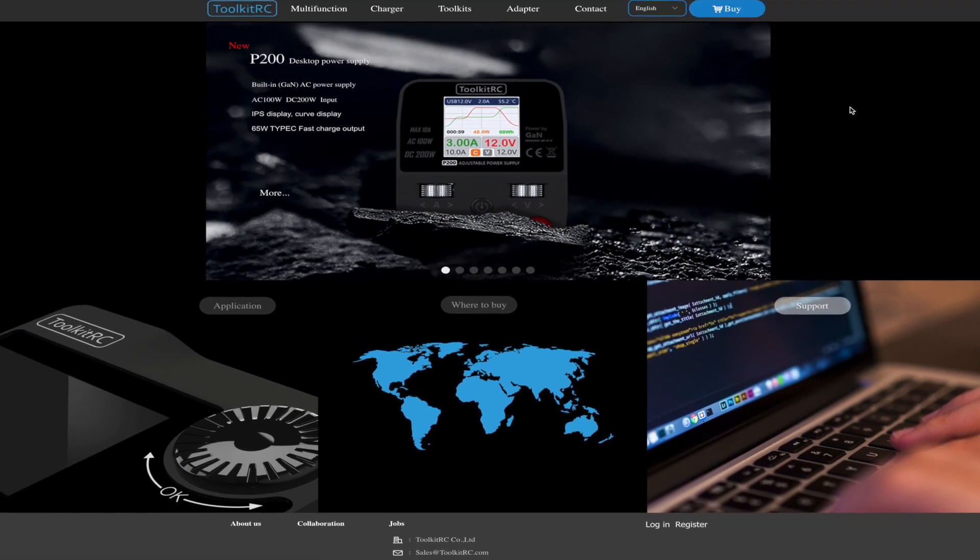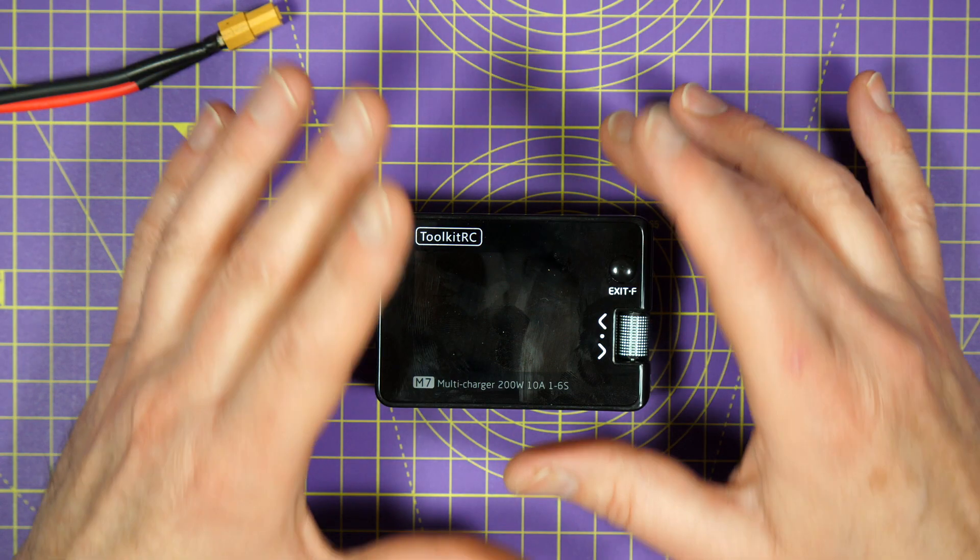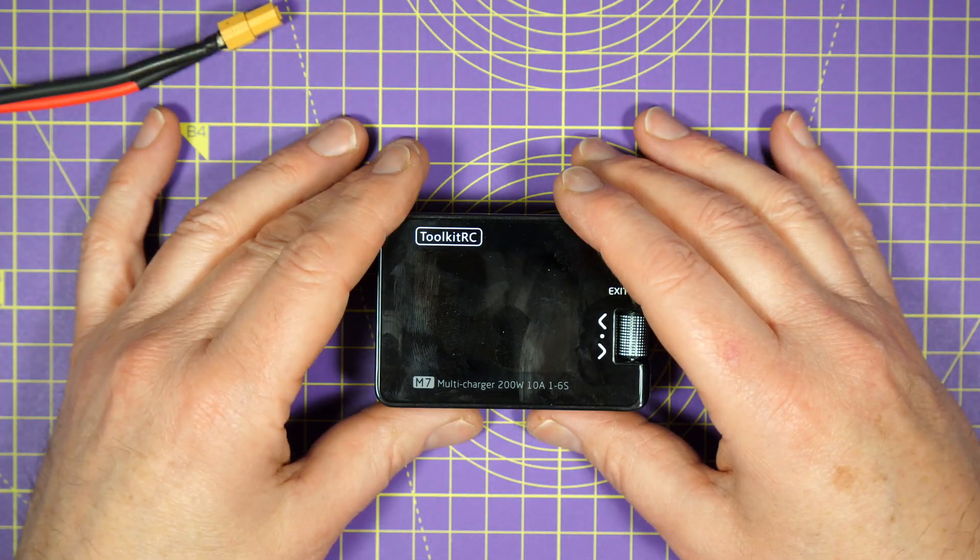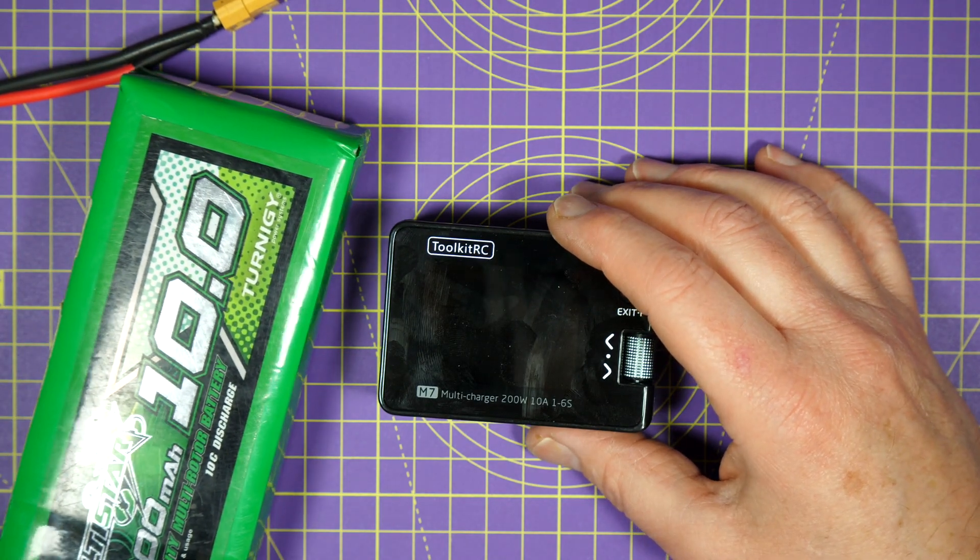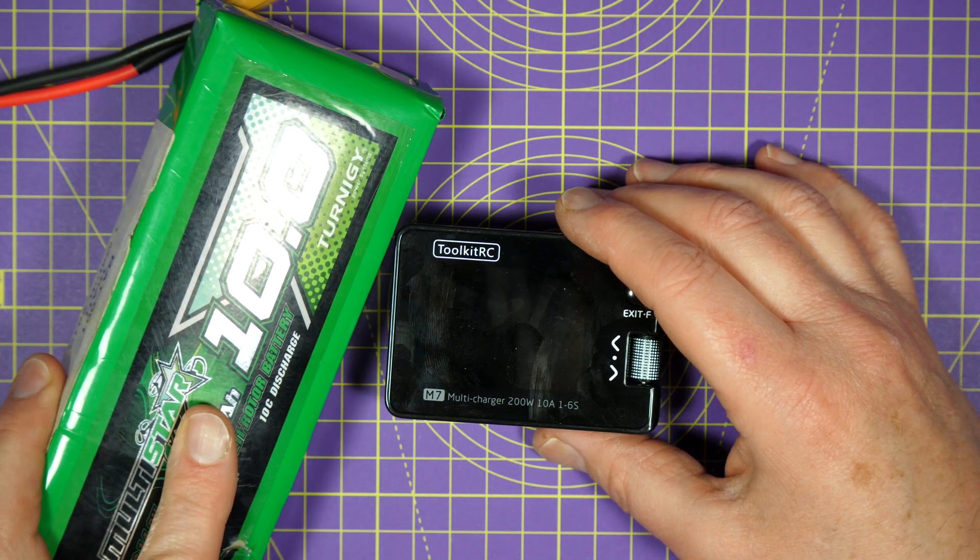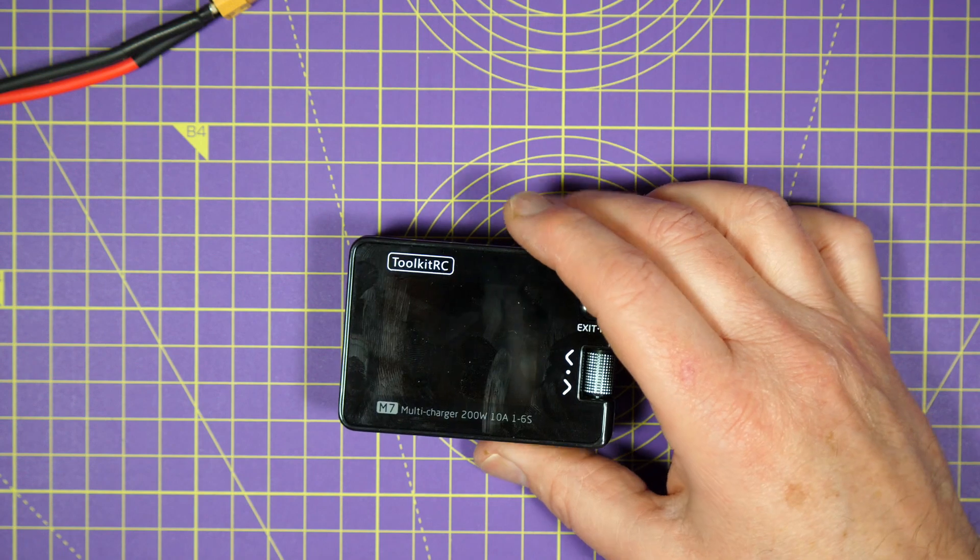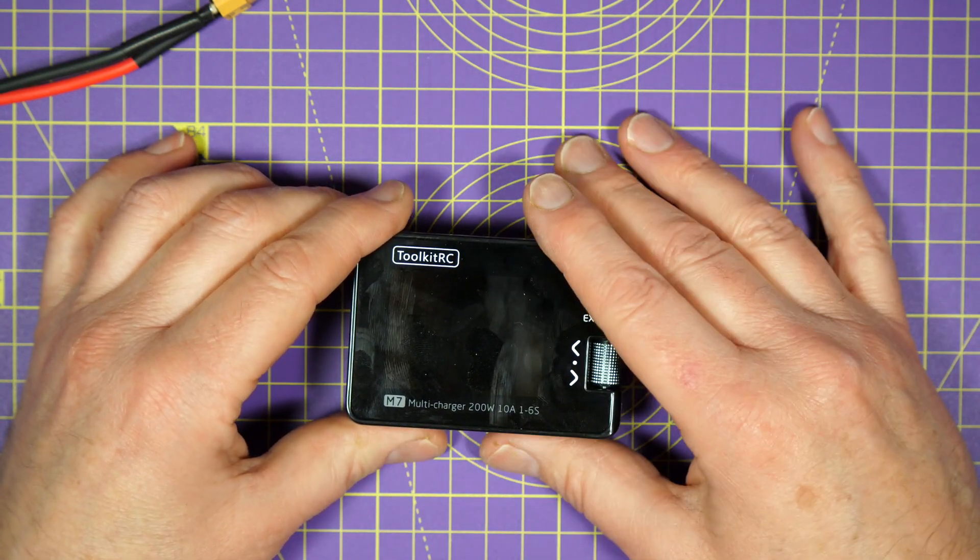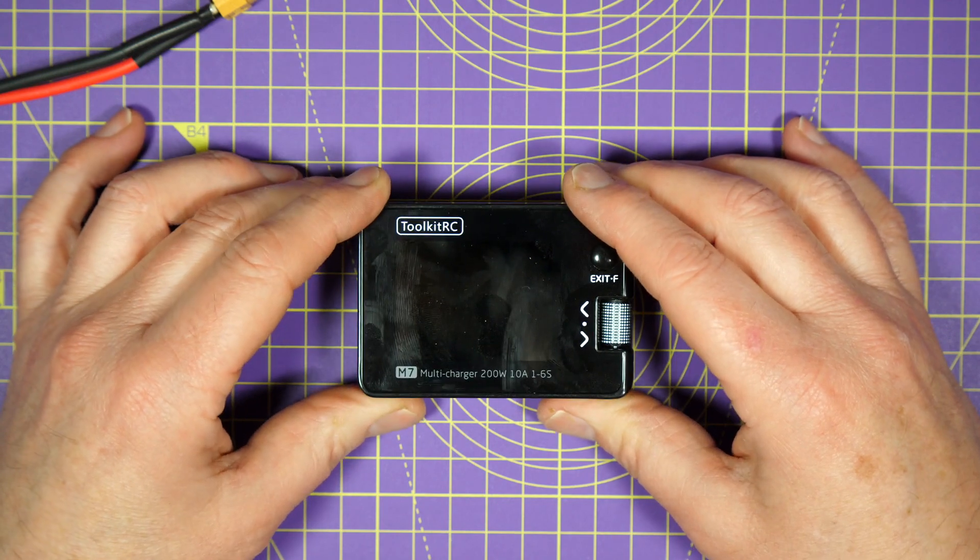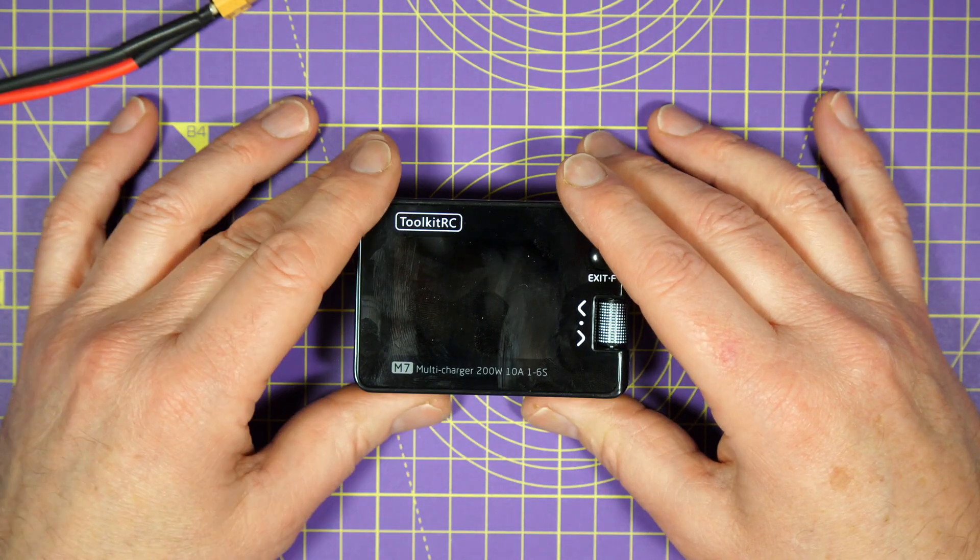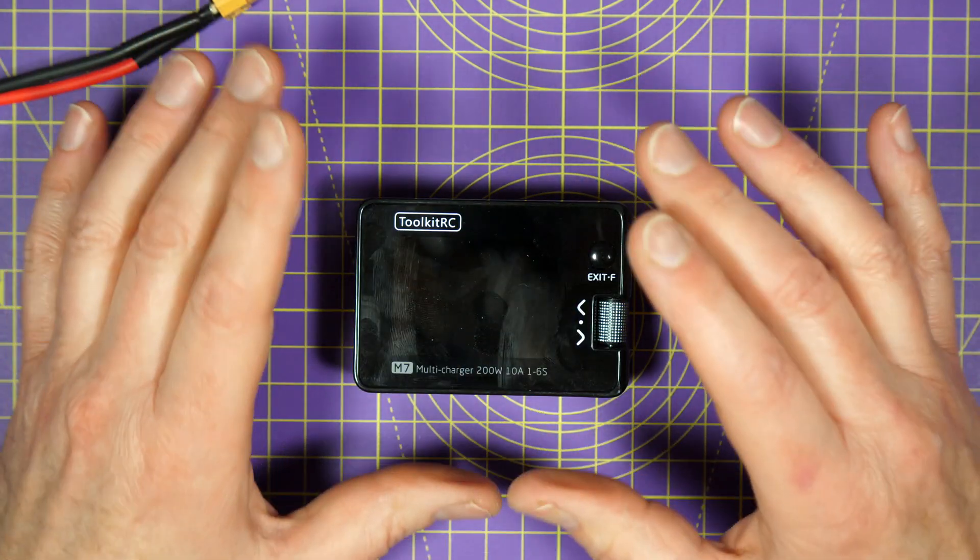And don't forget, you don't need a desktop DC power supply like the P200 or something similar. You can just power this off another LiPo. This is great for when you're out in the field, and this is small enough to get lost in the bowels of your flight bag, which I've found to my cost. So Toolkit RC, you've nailed it yet again.